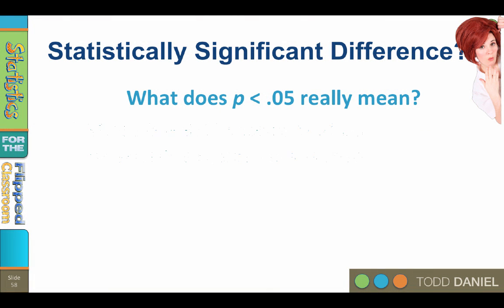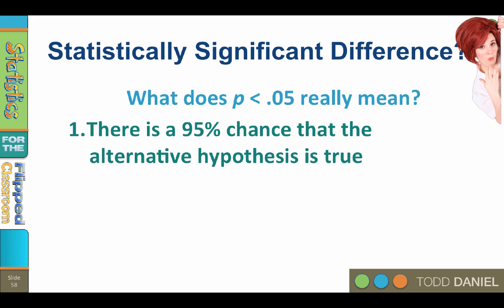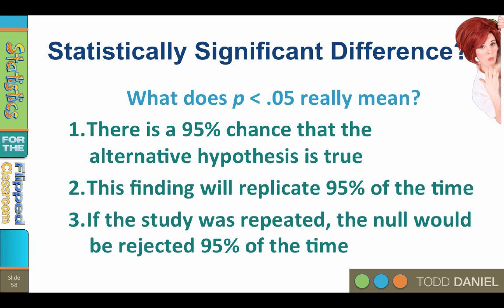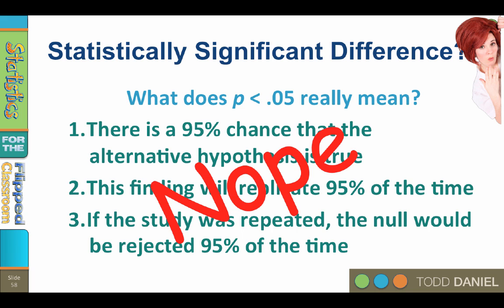When you find a statistically significant difference, does that mean that there is a 95% chance that the alternative hypothesis is true? Or that this finding will replicate 95% of the time? Or that if the study was repeated, the null hypothesis would be rejected 95% of the time? No, it means none of those things.